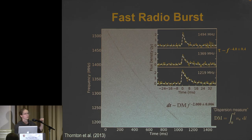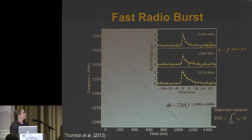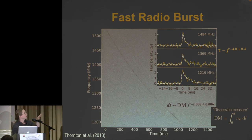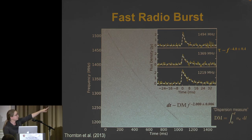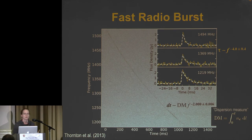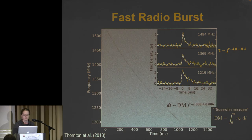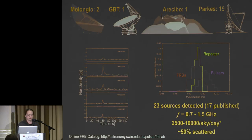Another interesting property is the characteristic fast rise and exponential tail in the light curves, shown here at three different frequencies. The frequency-dependent width of the burst also follows a frequency-dependent term — this particular burst has frequency-to-the-minus-four, which agrees very well with what we see in pulsars. This is just multi-path scattering pushing light to later times.